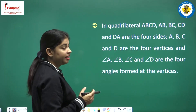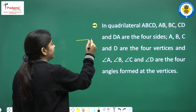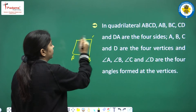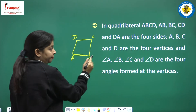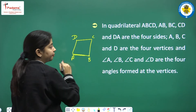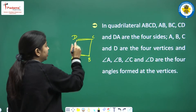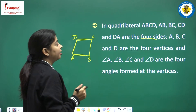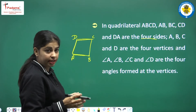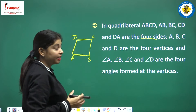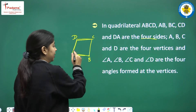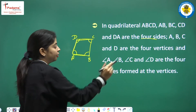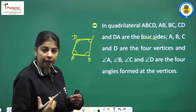In quadrilateral ABCD, AB, BC, CD, and DA are the four sides. A, B, C, and D are the four vertices. Angle A, angle B, angle C, and angle D are the four angles formed by the vertices.